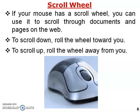Scroll wheel: this is the third part of the mouse. If your mouse has a scroll wheel, you can use it to scroll through documents and pages on the web. To scroll down, roll the wheel towards you; to scroll up, roll the wheel away from you.